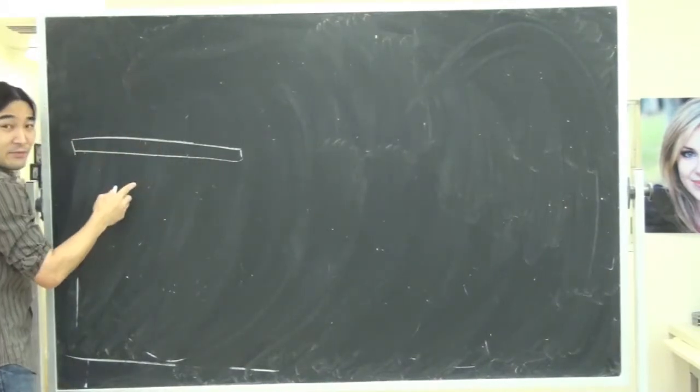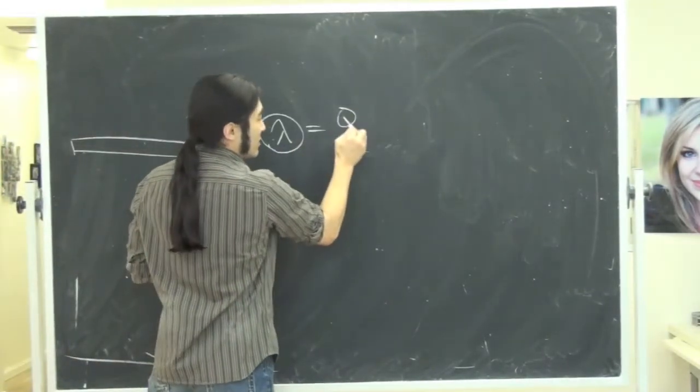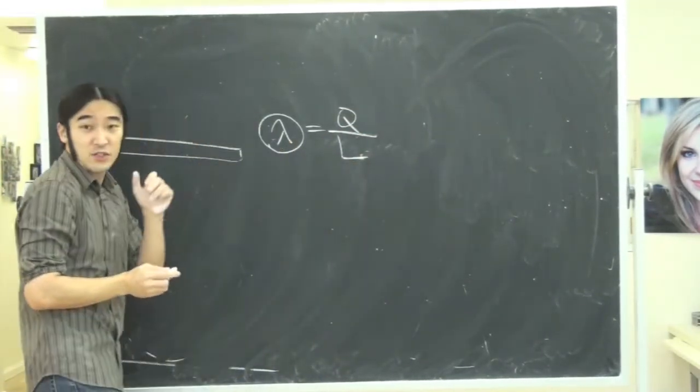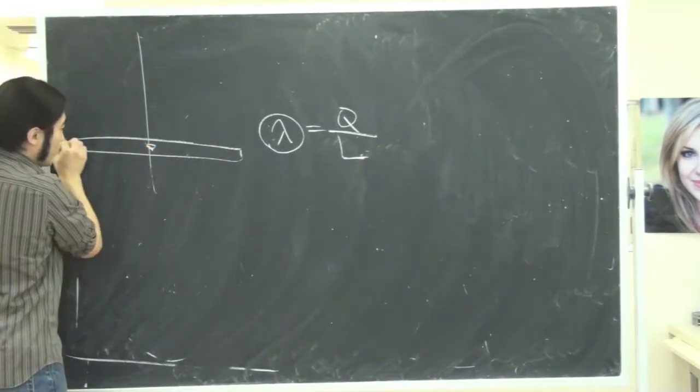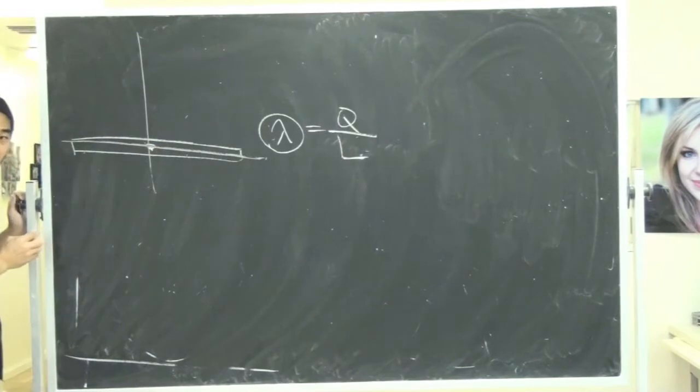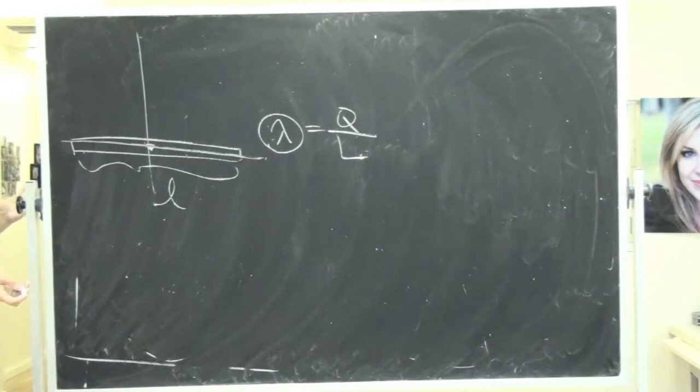So you've got this guy. He has uniform charge density, let's say lambda. Remember what that means - you take the charge, divide by the length, and you get his charge density. Then what we're going to do is sit him here with the x-axis, put him right in the middle over here, and we'll give it total length of L.